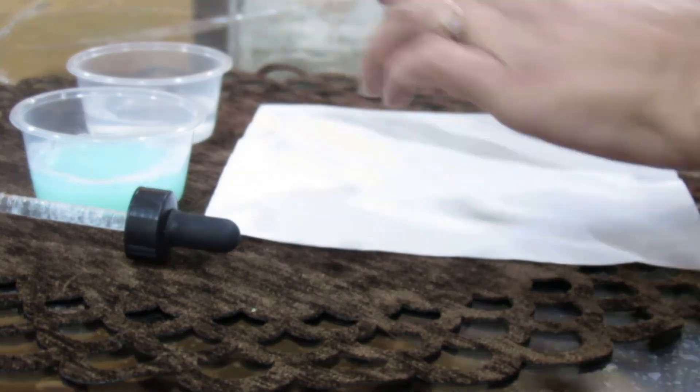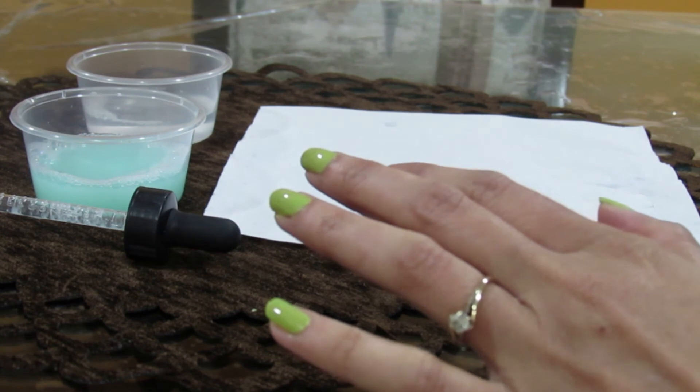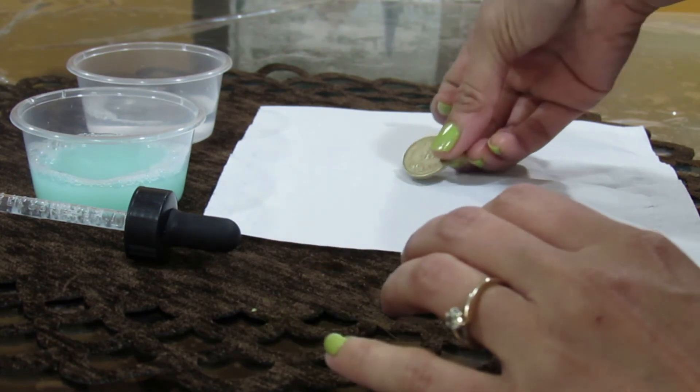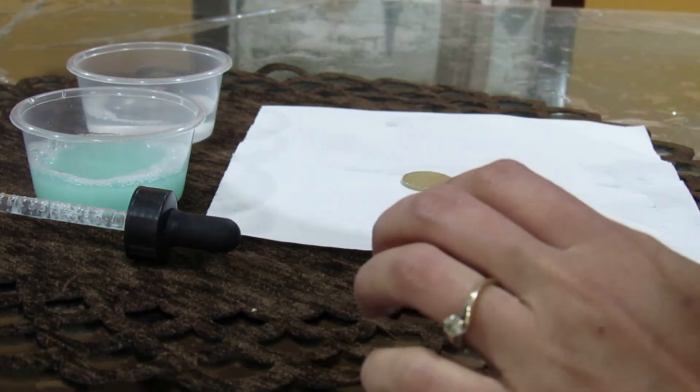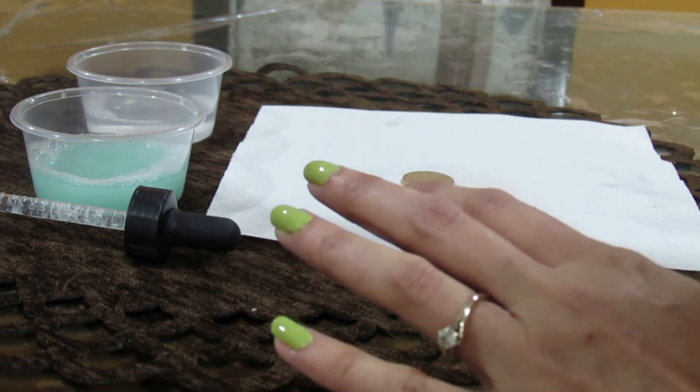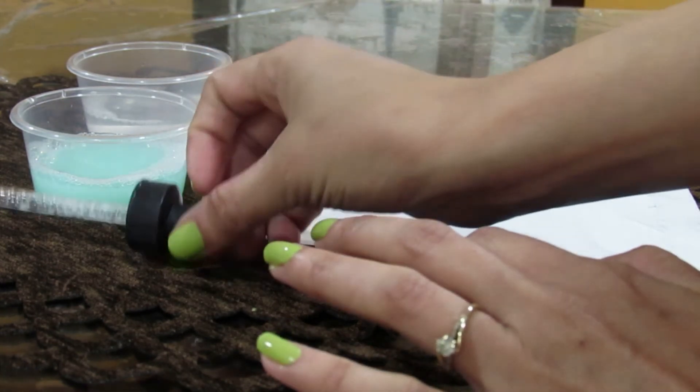Now put a fresh paper towel and place your coin onto it. We are going to see how many drops of soapy water we can put onto the coin. So let's begin.